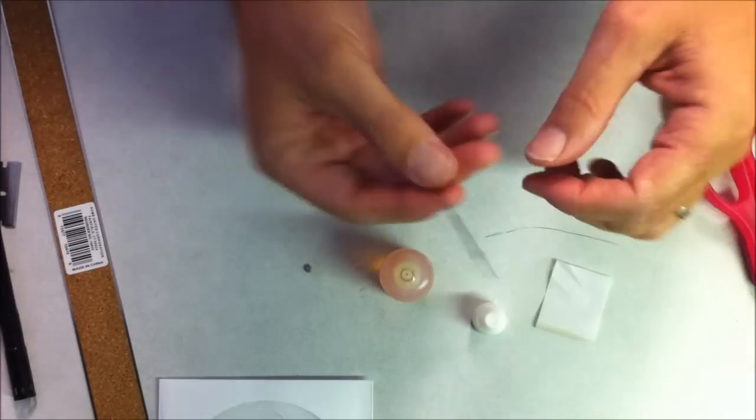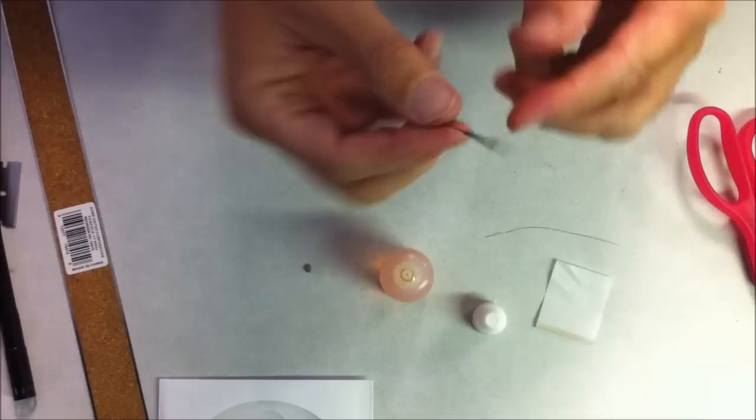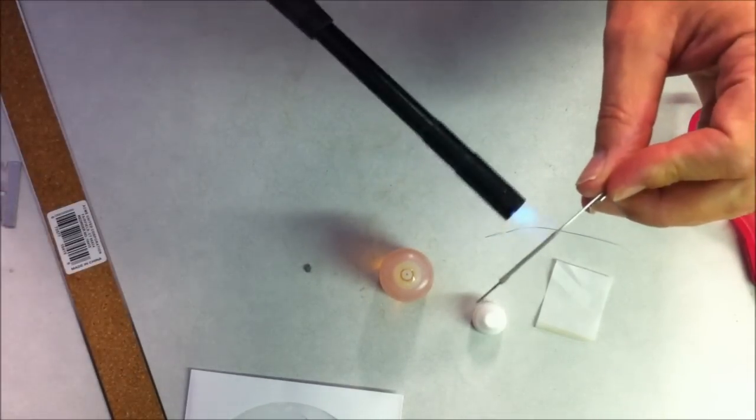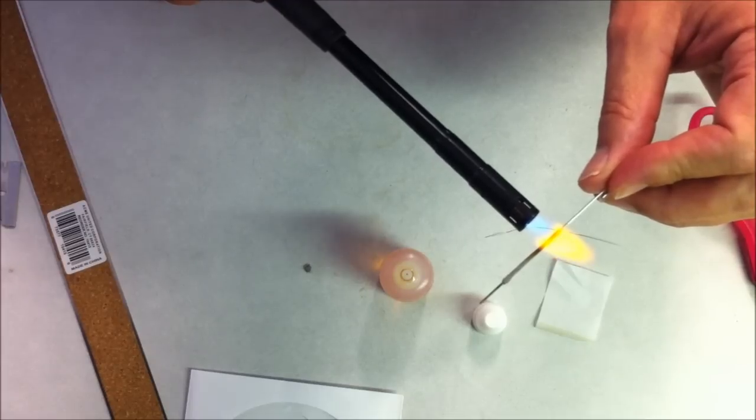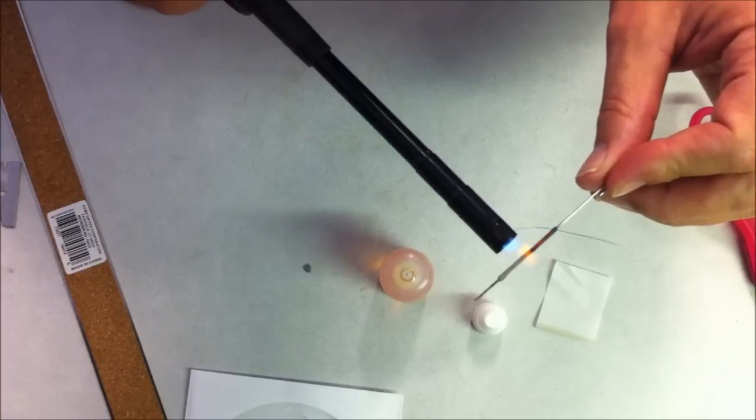Alright, now that we've got it nice and thick at this end, thin at that end. Now we're going to go ahead and do a heat treat. And just get the sucker nice and red hot. Start to glow, you move on.